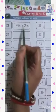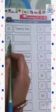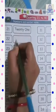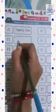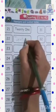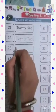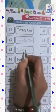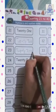Twenty-one: T-W-E-N-T-Y O-N-E, 1 — 21. We have to write 22. Tell me the spelling of 22. Yes, we have to write the spelling here: T-W-E-N-T-Y — 22.